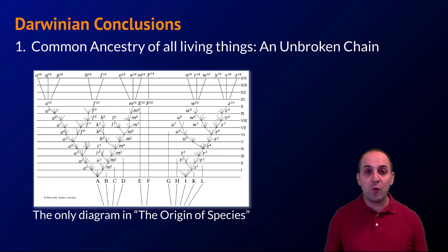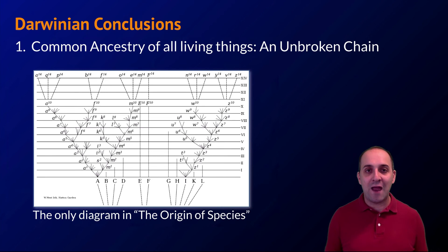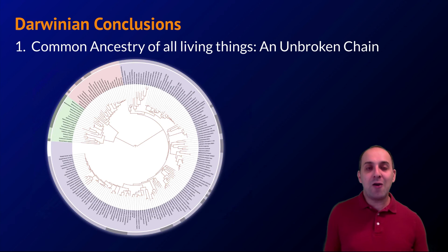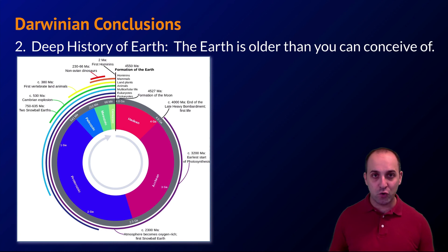Two fundamental conclusions stem from evolutionary biology. The first is common ancestry: every organism alive today represents an unbroken line of descent from the first universal common ancestor of all living things. Diagrammatically, this is shown as a tree diagram — the only diagram Darwin included in the first edition of 'On the Origin of Species.' Modern tree diagrams are considerably more developed, based on sequenced genomes of all represented species, with humans visible as one branch among many.